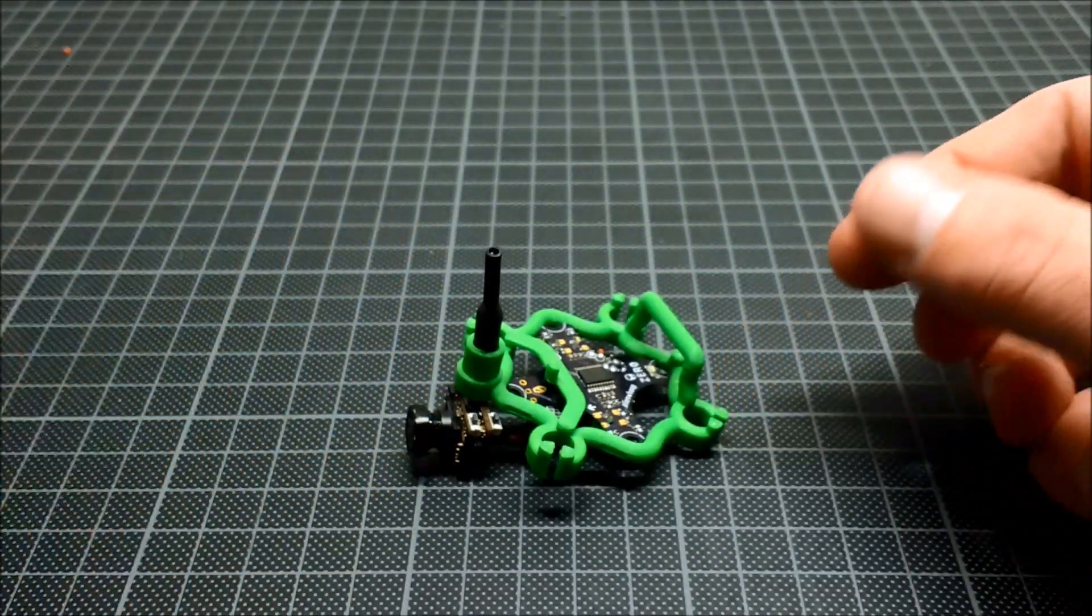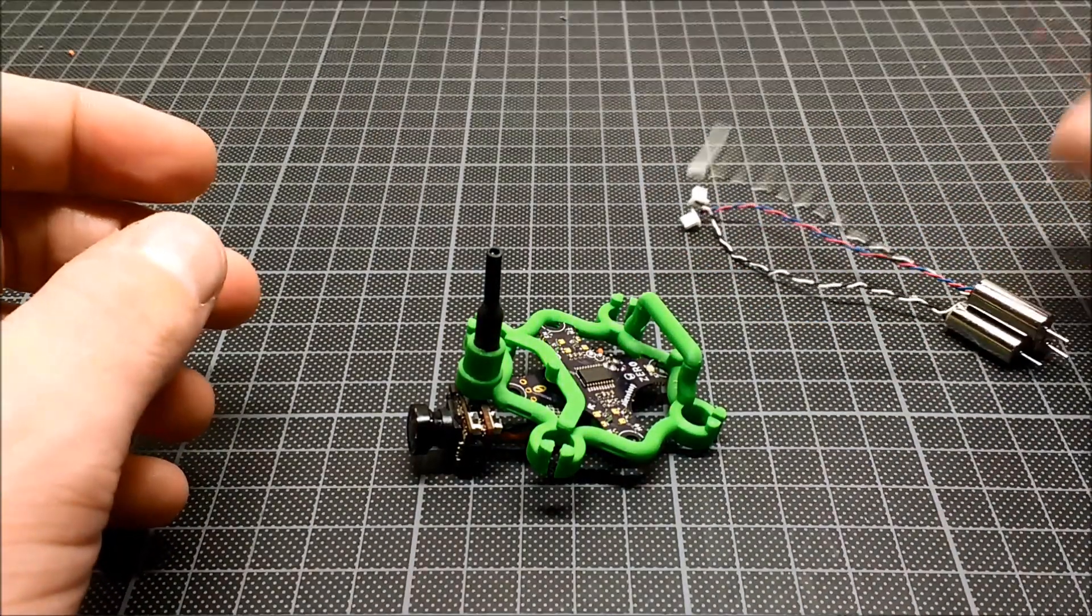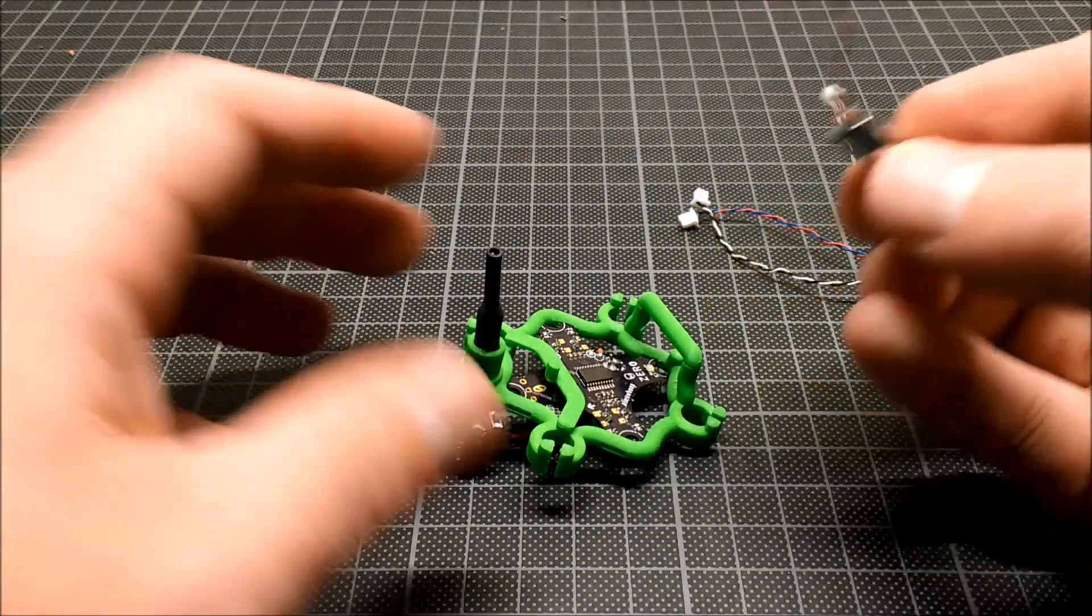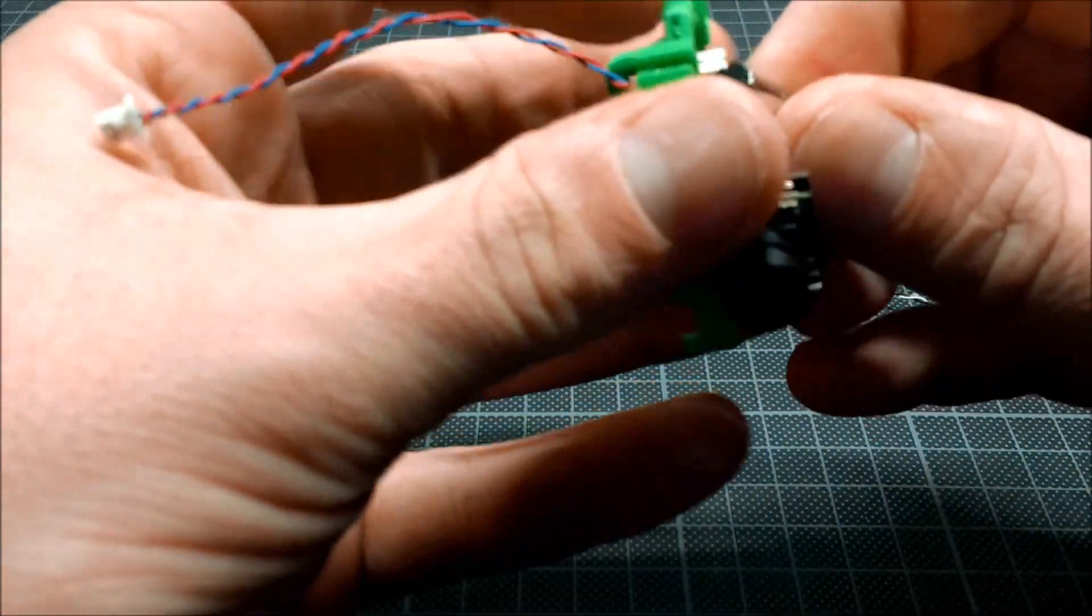Now it's time to mount the motors upside down. As we mount the motors inverted, the sense of rotation changes. Because of that, we have to mount clockwise motors where normally counterclockwise motors would be and vice versa.